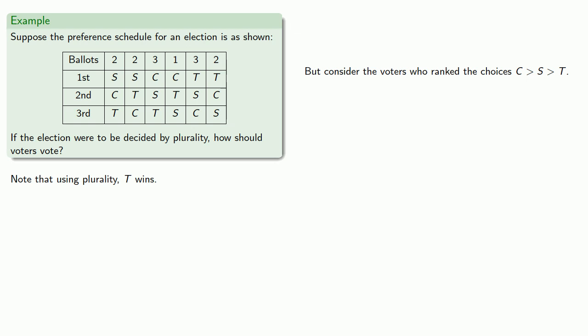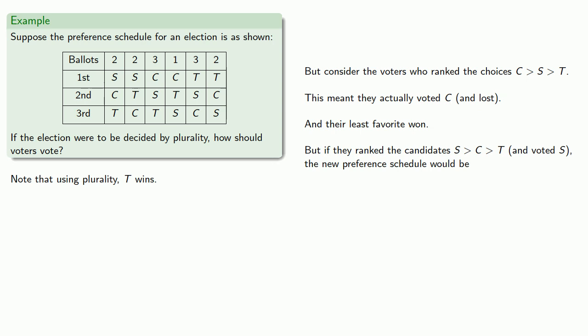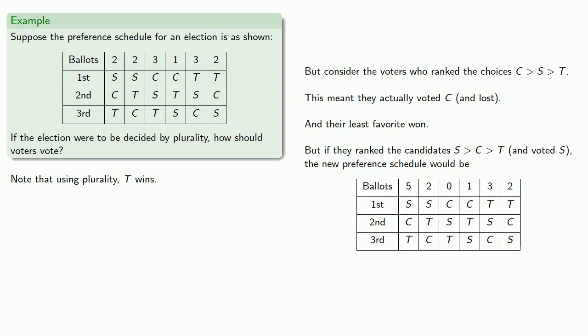But consider the voters who ranked the choice as C over S over T. Now, since this is plurality, this means they voted for their first choice. So they actually voted C and lost. And since T won, their least favorite won. So the question is, if they voted differently, could they have gotten a better outcome? So if they rank the candidates S over C over T and voted for S, then the new preference schedule would be... And now S has 5 plus 2, 7 votes, and S would win the election.